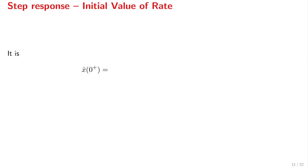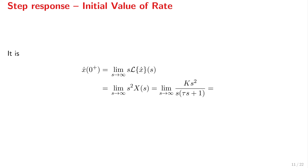What about the initial value of the rate of the response — the initial rate x-dot at 0-plus? This is the limit of s times the Laplace transform of x-dot, which is s times X(s). So we need the limit of s² times X(s), which is Ks² over s(tau s + 1). You can verify that this limit equals K over tau.